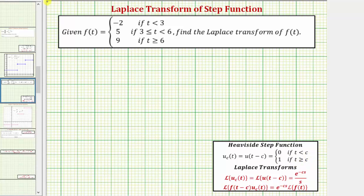To do this, we'll begin with our function f of t and notice how the first function value is negative two. So we'll let f of t be equal to negative two. Instead of multiplying this by a difference, we'll just leave this as negative two and build from here, because the remaining function values are constants.